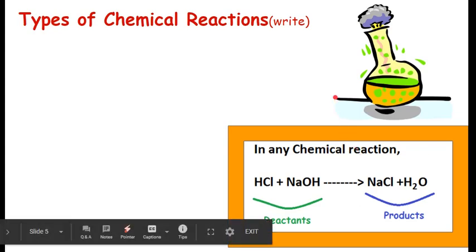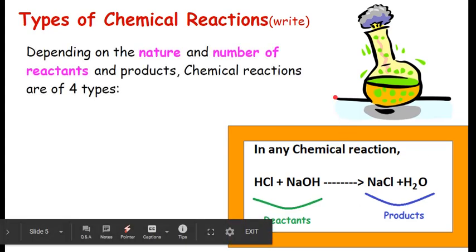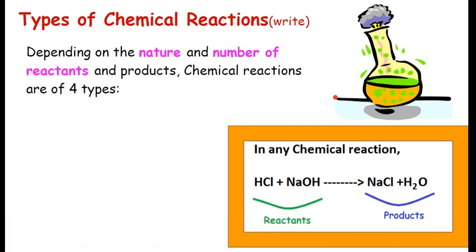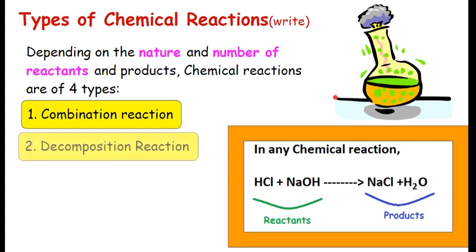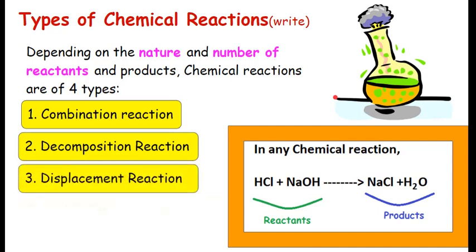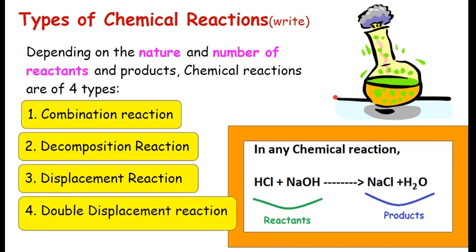Now, depending on the nature and the number of reactants and products - the nature, meaning what kind of reactants and products, and second, how many reactants and products - on this basis chemical reactions are of four types and it's very simple to understand. First one is called combination reaction. Next is called decomposition reaction. The third one is called displacement reaction. And the last one is called double displacement reaction.